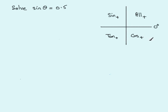Now how do we use the quadrant diagram to solve an equation like this? In this equation, we have that the sine of an angle is a positive value, 0.5. And so we ask ourselves, where is sine positive? We can see from this diagram that sine is positive in the first quadrant and the second quadrant.